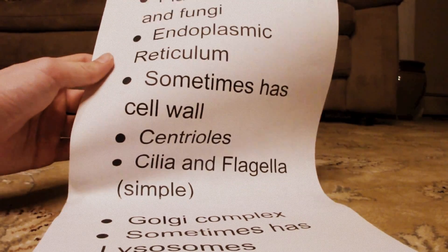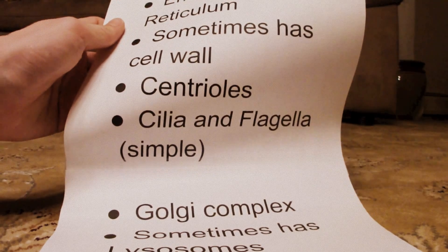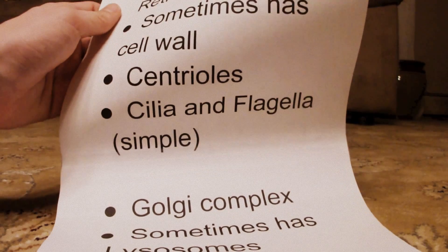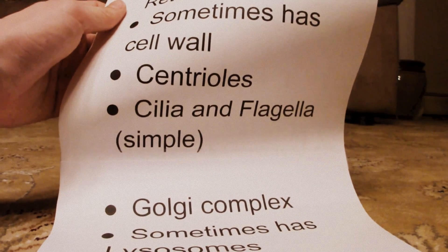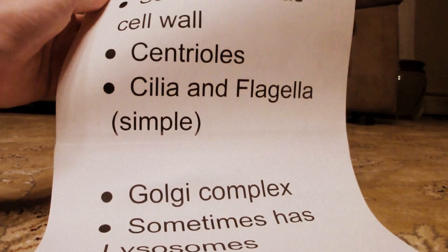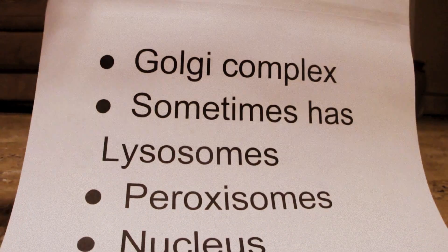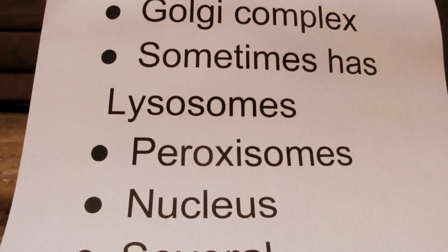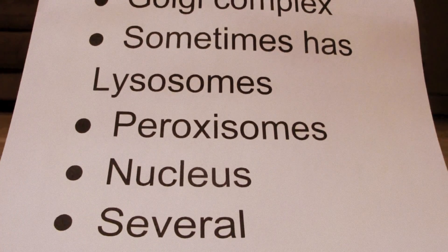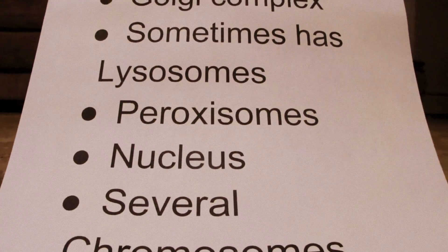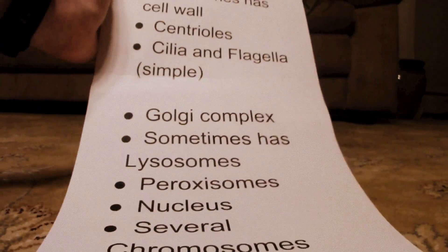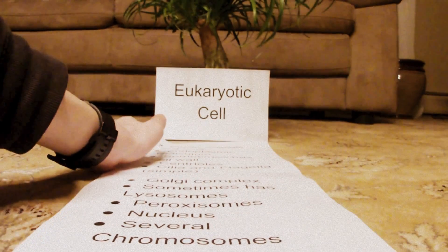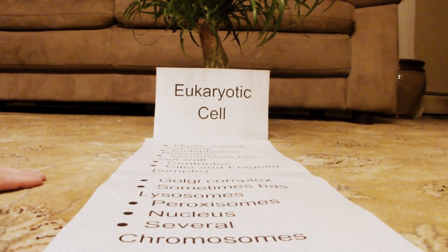Eukaryotic cells also have centrioles, which are used during cell division. They have cilia and flagella, which aid cell movement. They also have a Golgi complex, which packages things in the cell for export. Sometimes they have lysosomes, which digest waste. They have peroxisomes, which harbor enzymes and clean up the cell. It has a nucleus, which contains DNA, and they're made up of several chromosomes.